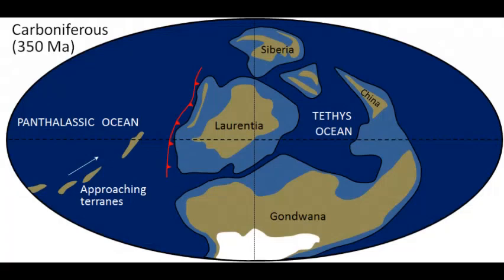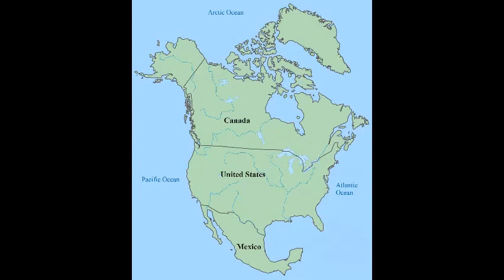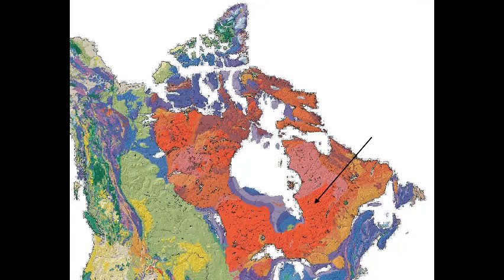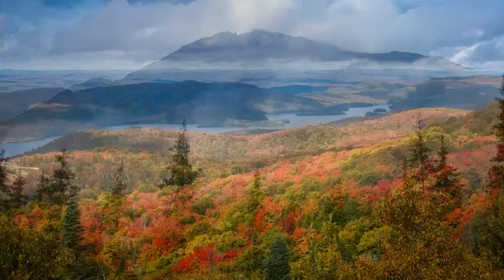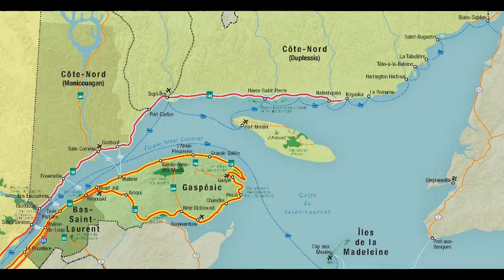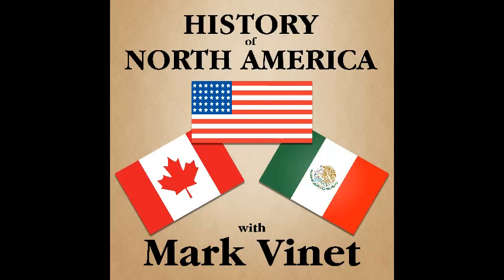The final phase of its rifting produced the continental craton of Laurentia, which would later become North America. Laurentia is named after Canada's Laurentian Shield, home of spectacular landscapes and the majestic Laurentian Mountains, which received their name from the St. Lawrence River, named after the early Christian martyr, Lawrence of Rome.